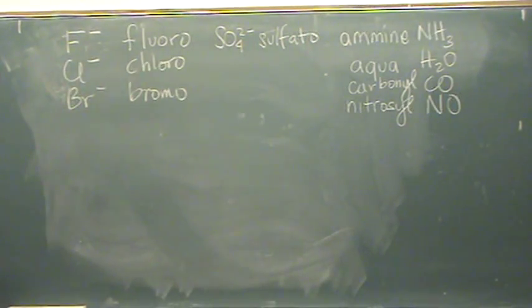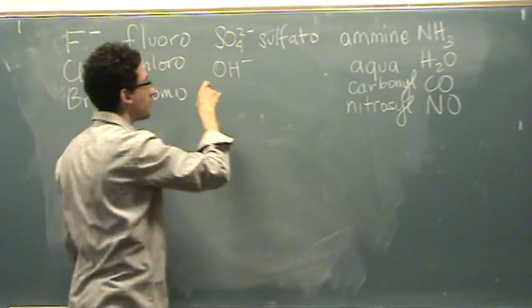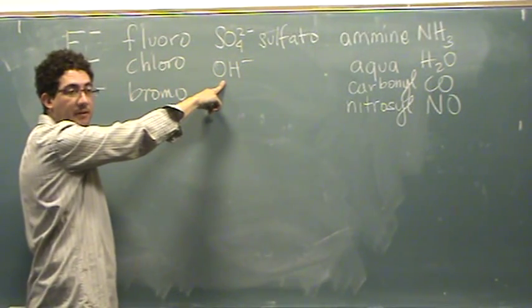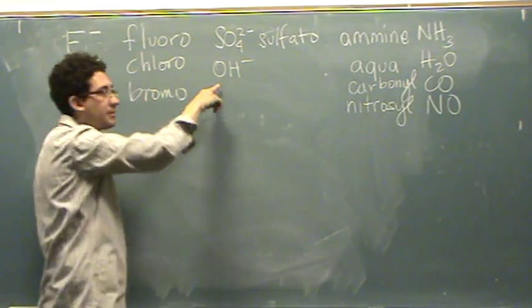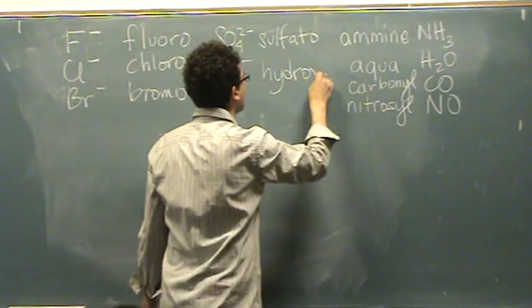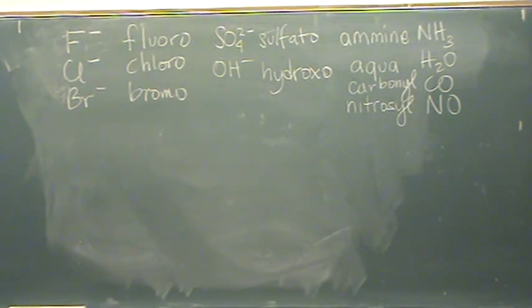So you're essentially adding O's at the end of the name. Anybody remember the name of this one? Hydroxide. Yeah, that's a hydroxide. This is hydroxyl. So you cut the I-D, or if it's an A-T-E or an I-D ending, you could put just an A-T-O or an I-T-O respectively.